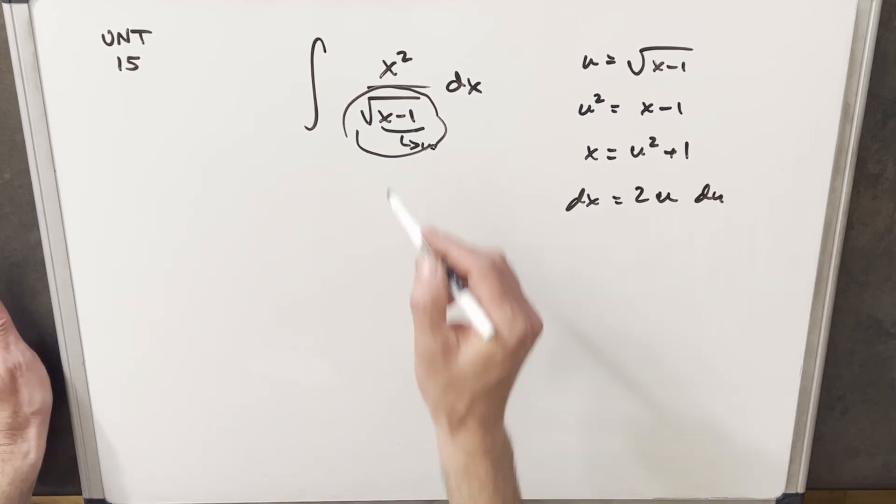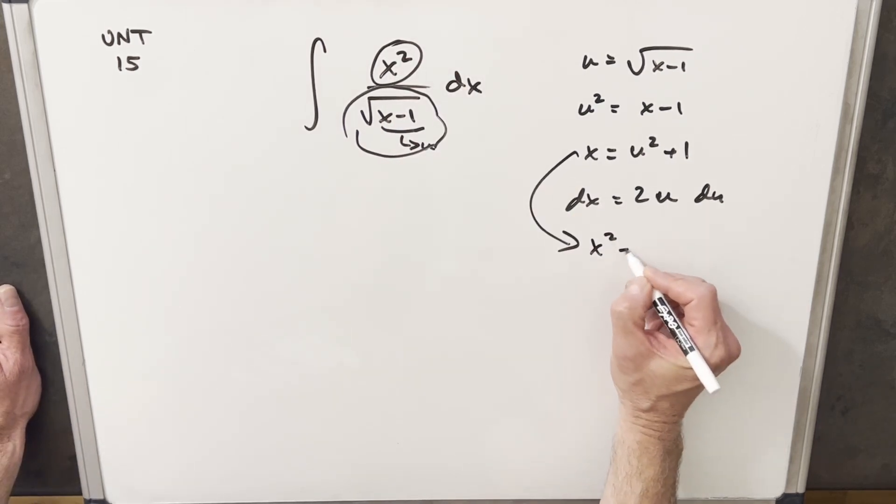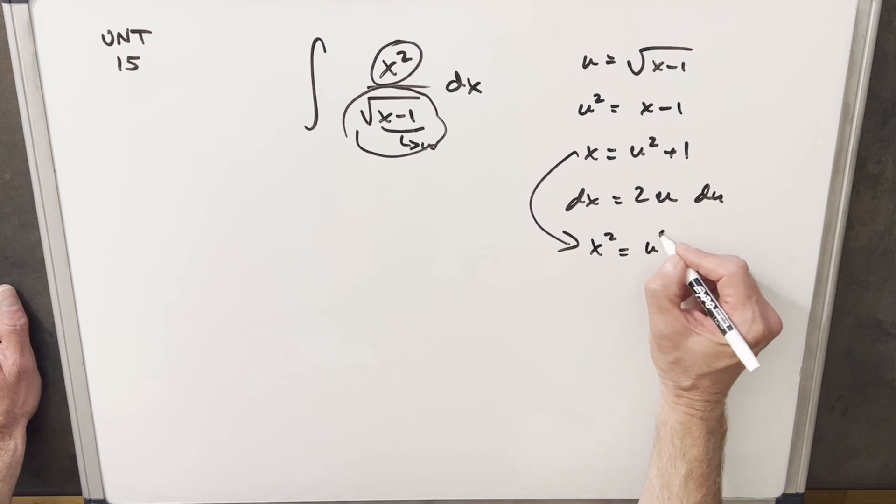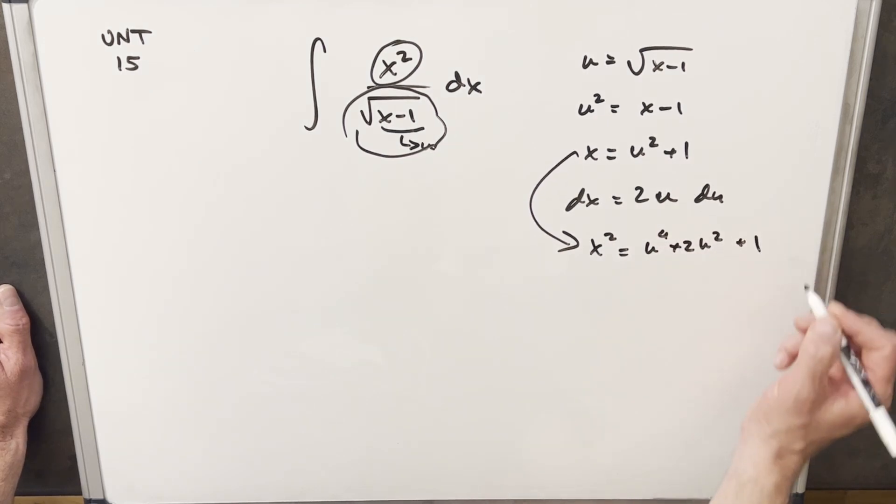And you know one other thing? We need an x squared here, so I'm going to square this up just so we have it ready. So x squared is going to be, just multiplying it out, it's going to be u to the 4th, 2u squared plus 1.